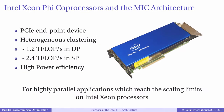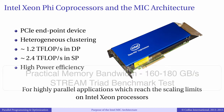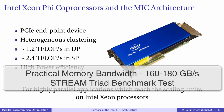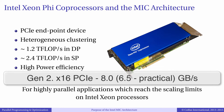Xeon Phi Co-Processors are PCI Express endpoint devices. They are primarily used for offload of performance-critical parts of an application and for heterogeneous clustering. For highly parallel applications, Xeon Phi Co-Processors have theoretical peak performance up to 1.2 teraflops per second in double precision and 2.4 teraflops per second in single precision. The theoretical peak bandwidth of the onboard memory is up to 384 GB per second; however, in practice we observe about 160–180 GB per second. Connectivity with the host system is provided by a x16 PCI Express Gen2 interconnect.